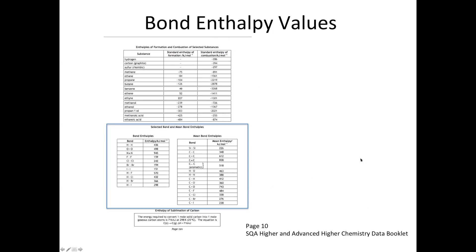That 436 kJ/mol value comes straight out of the data booklet — our chemistry data booklet on page 10. On that page you'll also find enthalpies of formation and combustion, which you may need for other chemical energy questions. For bond enthalpy, you want the specific section I've highlighted with a blue box. You'll notice it's split into two tables, so make sure you check both tables to find the right bond.